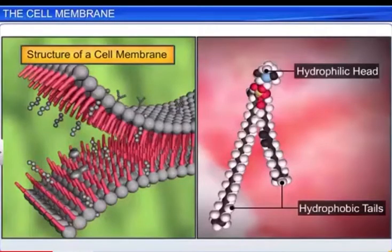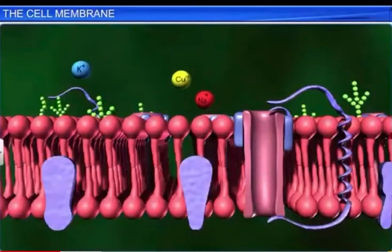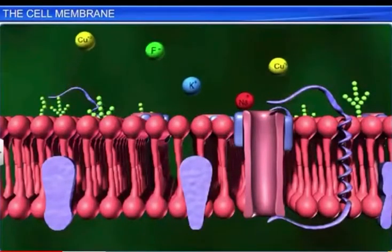Such an arrangement not only protects the tail from the aqueous environment, it also prevents polar molecules such as nucleic acids, proteins and ions from diffusing through it.